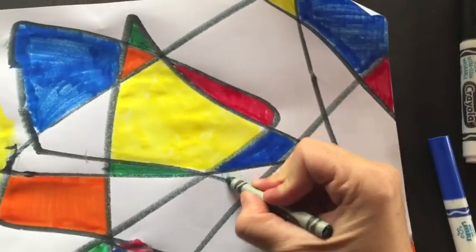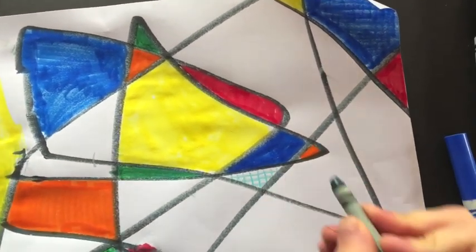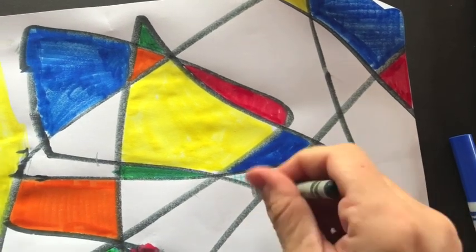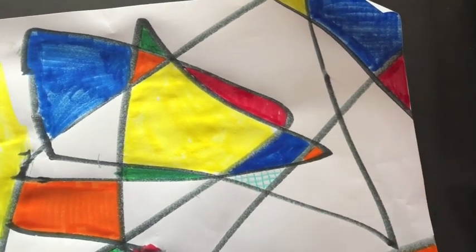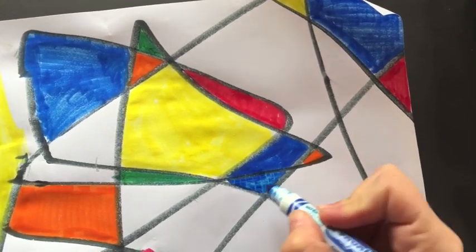You can even draw little patterns in some of these squares if you want. Doesn't really matter. Or you can do the thing where you put crayon in and then go over with marker to see what that looks like. And oh, yeah, you can kind of see the crayon coming through.